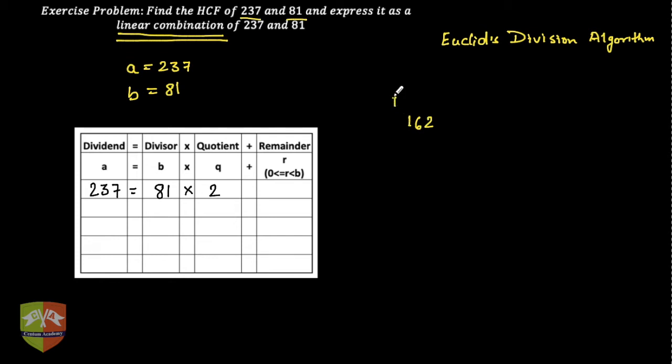2 times 81 is 162. This is the rough work I am doing here. So if you subtract 237 minus 162, what would be the value of r? This is 5 and this happens to be 75. So 237 can be written as 81 into 2 plus 75. If you see, 81 into 2 was 162. I subtracted 162 from 237 to get 75 as the remainder. That's what you would be doing in a long division process. So first step is done.